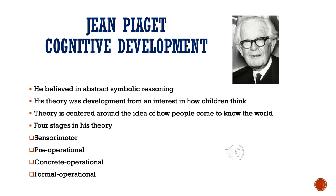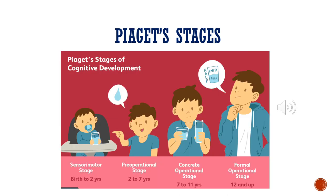Jean Piaget is the main theorist behind cognitive development. He believed in abstract symbolic reasoning, and his theory was developed from an interest in how people think and how people come to know the world. There are four stages in his theory: the first is the sensorimotor stage, the second is pre-operational, the next is concrete operational, and the last is formal operational. This last image does a great job of presenting Piaget's four stages of cognitive development.